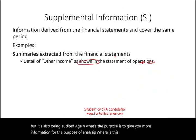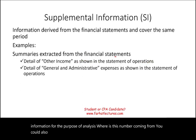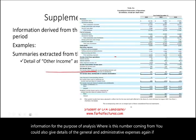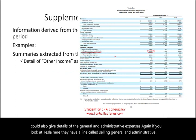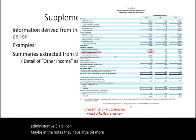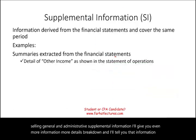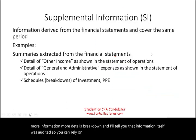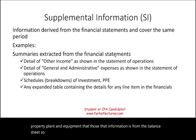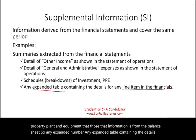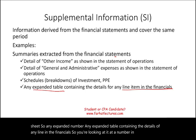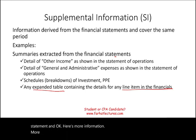You could also provide details of the general and administrative expenses. Looking at Tesla, they have a line called selling, general and administrative at $3.1 billion. Maybe the notes have a little more information, but supplemental information gives you even more details and a breakdown, and that information itself was audited so you can rely on it. Similarly, a schedule of breakdown of investment, property, plant and equipment — that information is from the balance sheet. Any expanded table containing the details of any line in the financials is supplemental information, as is any statistical data.